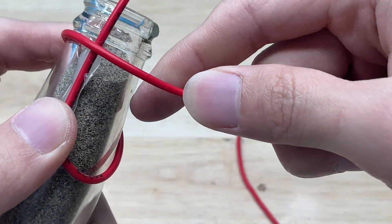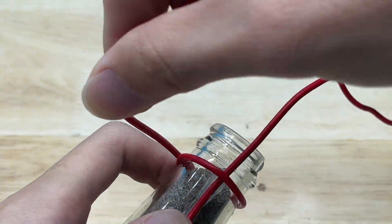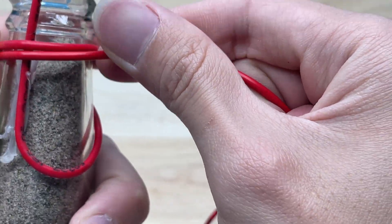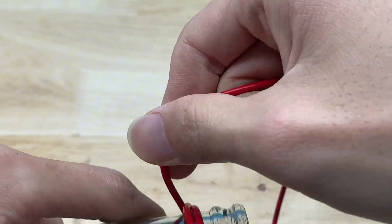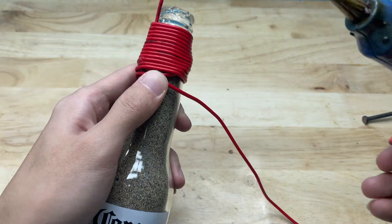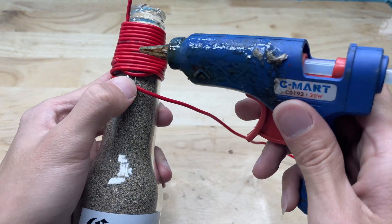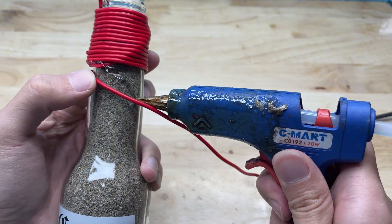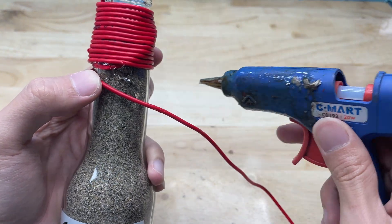After that, I will neatly wrap the electrical wire around the neck of the bottle to secure it and prevent tangling. Wrapping it tightly along the neck keeps the wire flush against the bottle, avoids any excess sticking out, and also provides a firmer grip when holding it. Once finished, the overall setup looks cleaner and more organized.